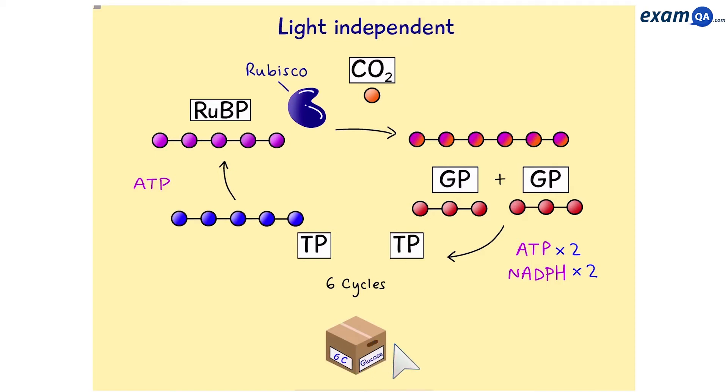Now sometimes, in questions, they like to refer to the amount of TP molecules required. For example, we know that we make 2 TP molecules per cycle. In order to make glucose or any hexose sugar that has 6 carbons, we need to spin the cycle 6 times. This is because we only get 1 carbon from each time we spin the cycle. So, 6 spins of the cycle will give us 12 molecules of TP. From these 12, 2 of them are going to turn into glucose, and 10 of them will be used to regenerate RuBP.